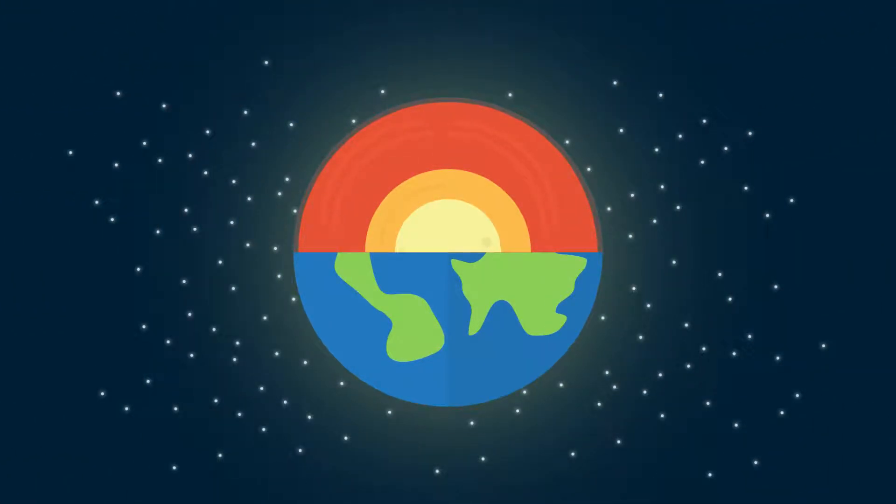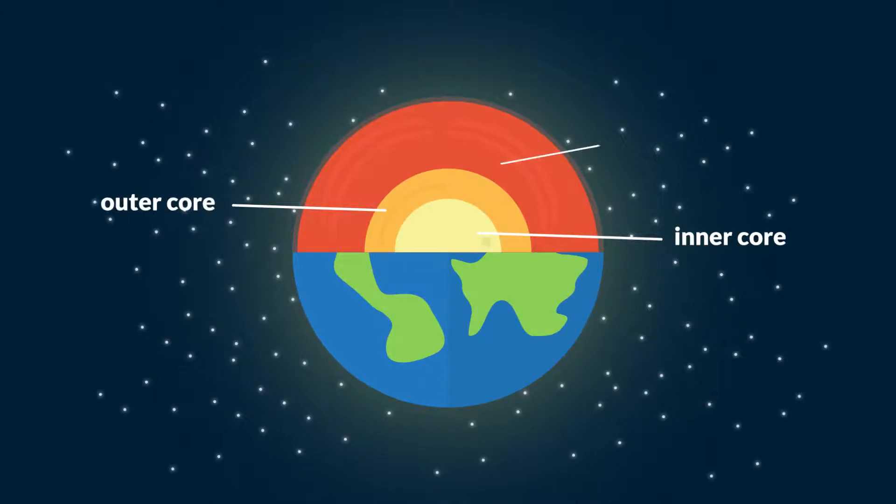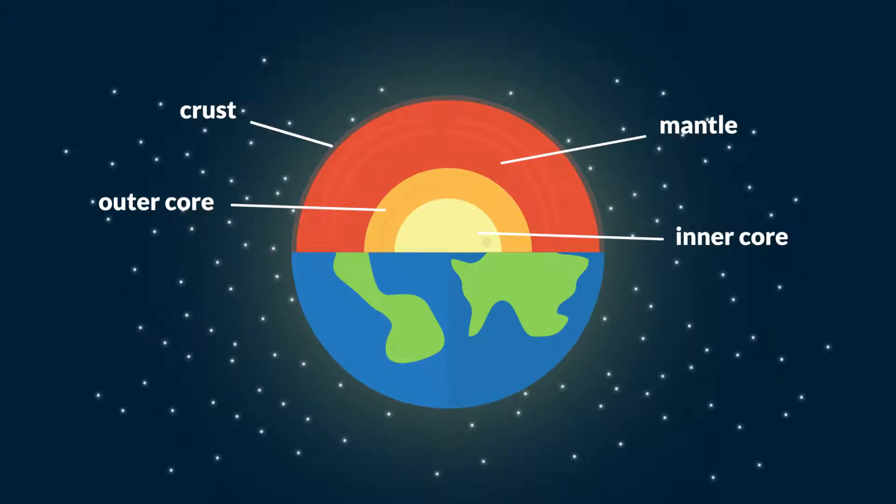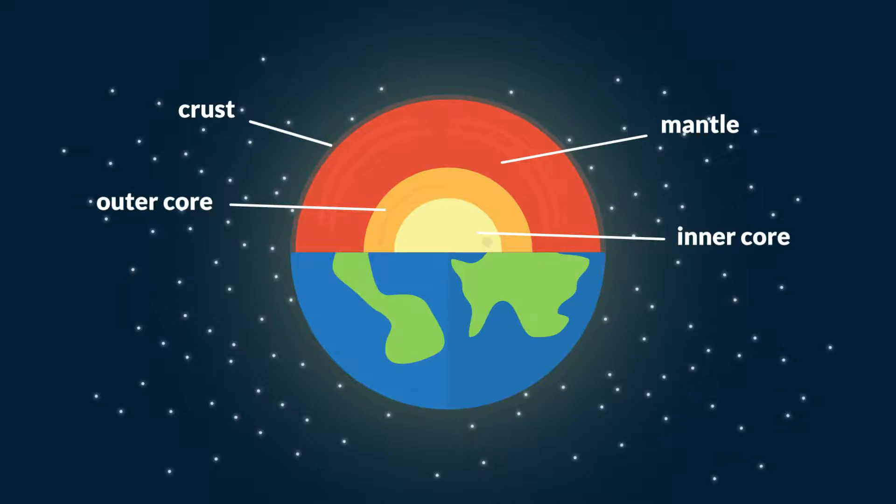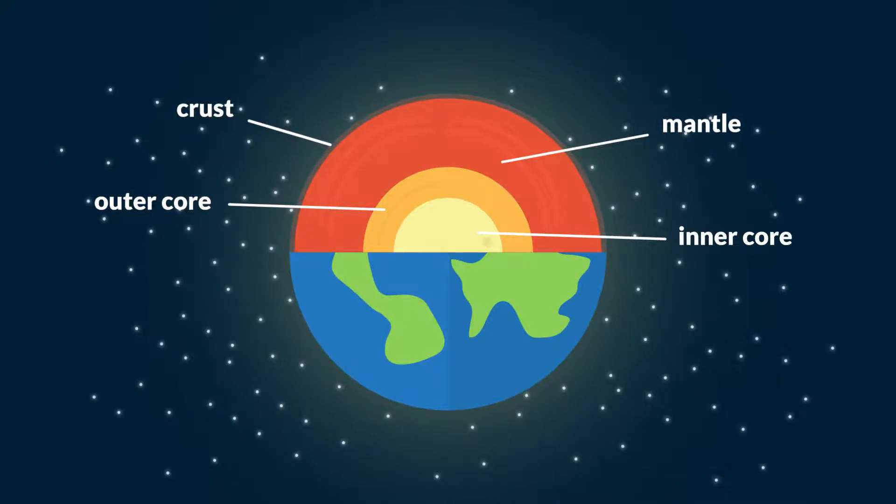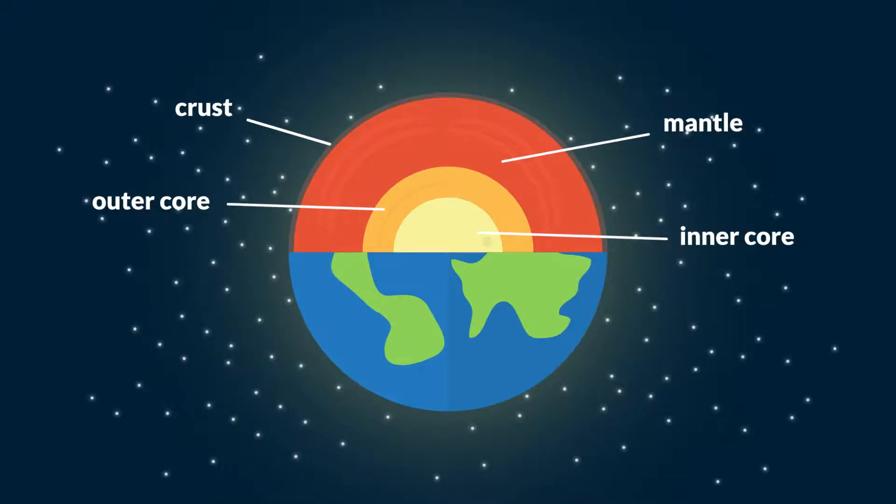The earth has four major layers: the inner core, outer core, mantle and crust. An earthquake occurs when large sections of the earth's crust called tectonic plates shift as we said before.